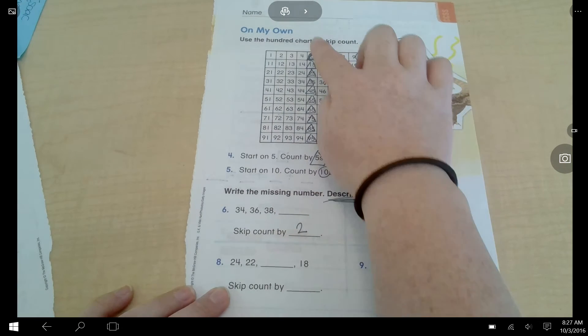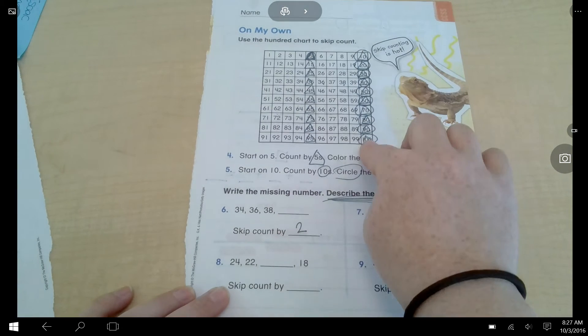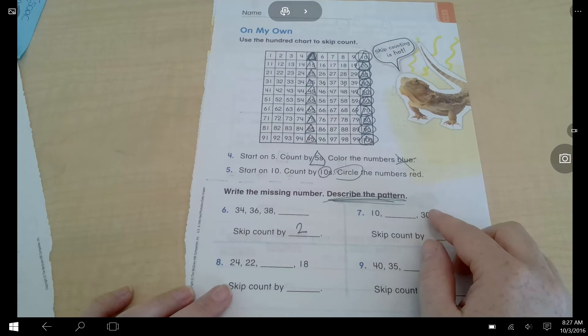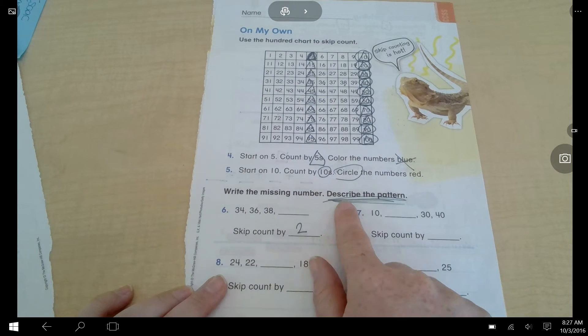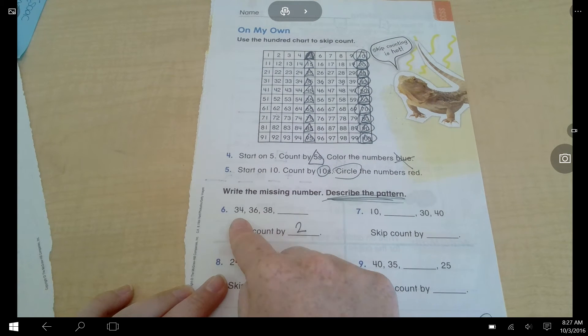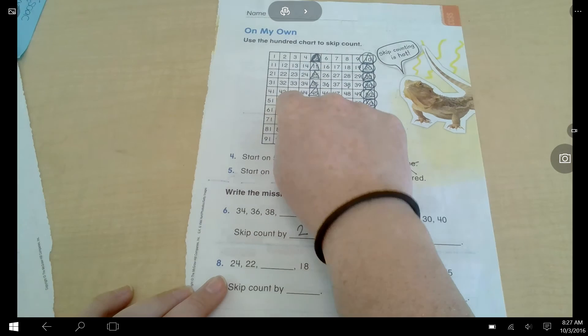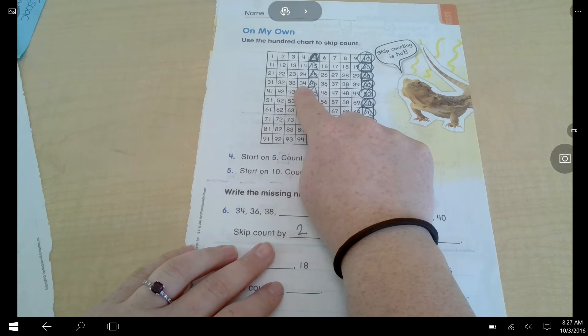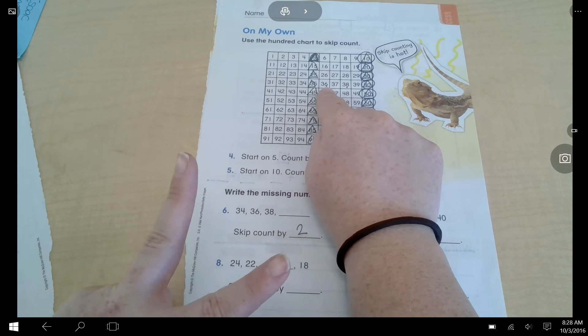Your hundreds chart should now look like mine with triangles down this column, triangles, and circles down this column. Because you skip count by fives and skip count by tens. Next, it says, describe the pattern as you're skip counting. So, in this one, I see I'm going 34. I'm going to find 34 in the chart. 34. And then I'm going to skip count to 36. 1, 2.